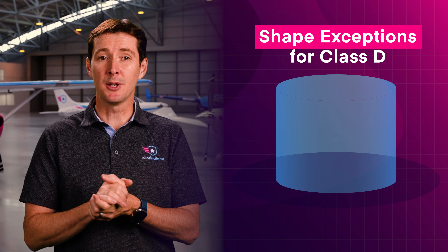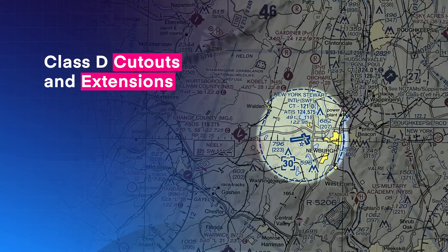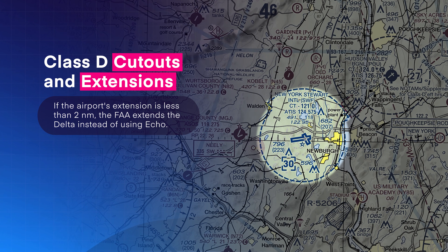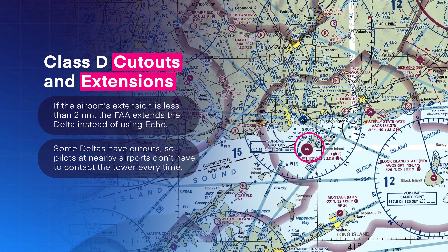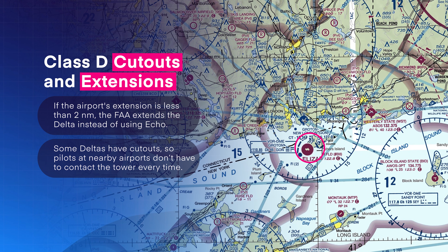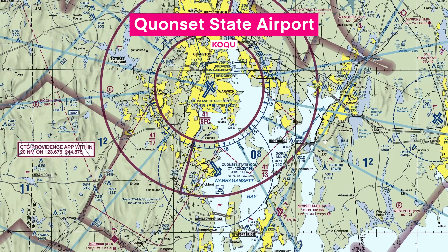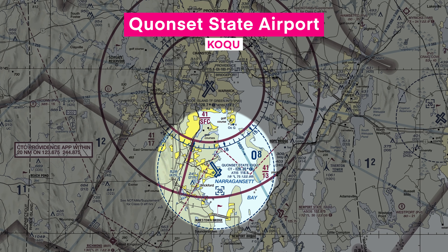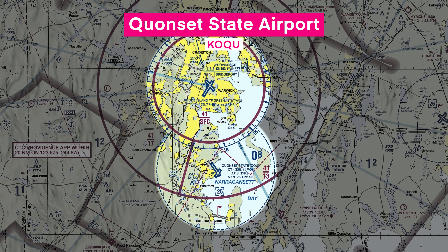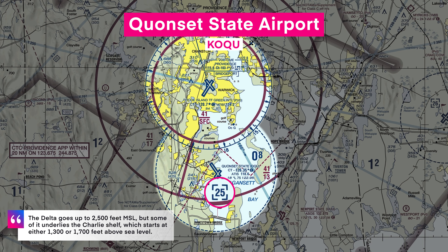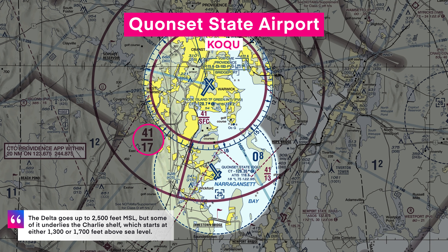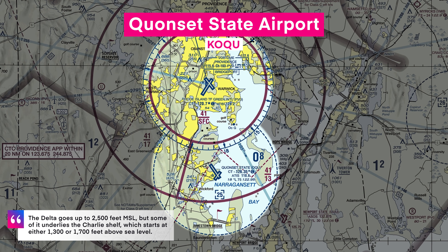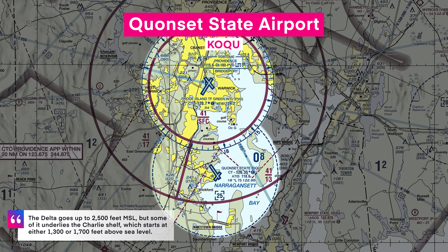There are some exceptions you should be aware of regarding Delta airspace shape. If the airport's extension is less than 2 nautical miles, the FAA extends the Delta instead of using Echo airspace. Other Deltas have cutouts, so pilots at nearby airports don't have to contact the tower every time they fly. Take a look at Hanscom State Airport — part of the Delta is cut off by the Class C airspace. The Delta goes up to 2,500 feet MSL, but some of it underlies the Class Charlie shelf, which starts at either 1,300 or 1,700 feet above sea level. Pilots need to be careful and stay out of the Charlie without permission.